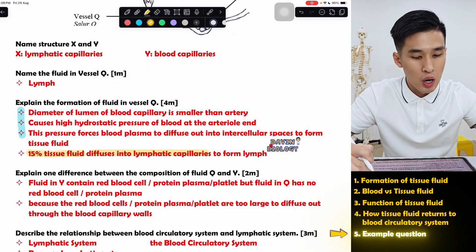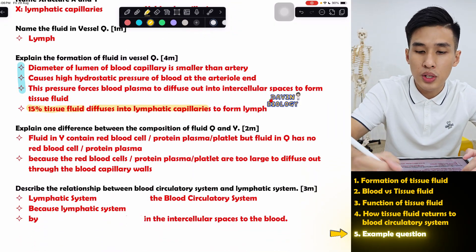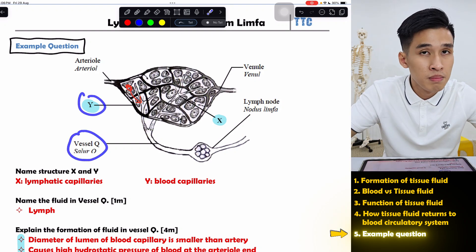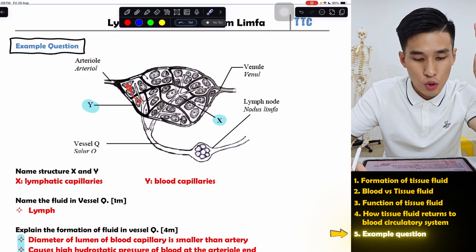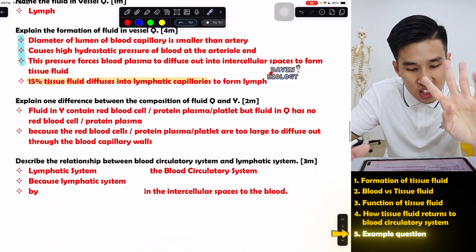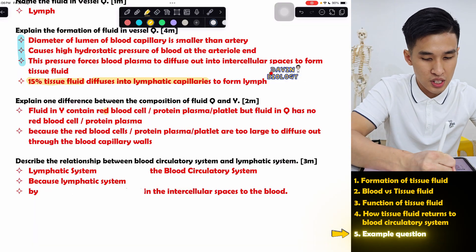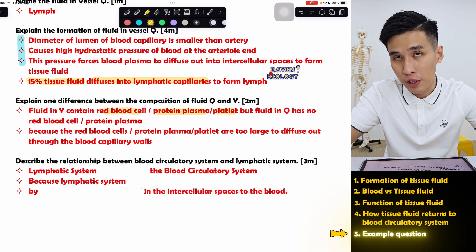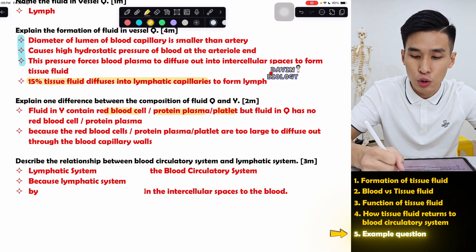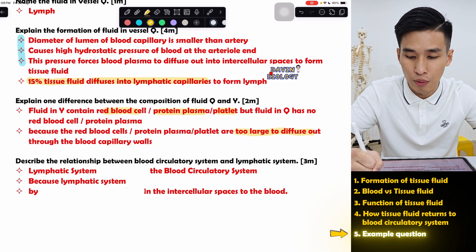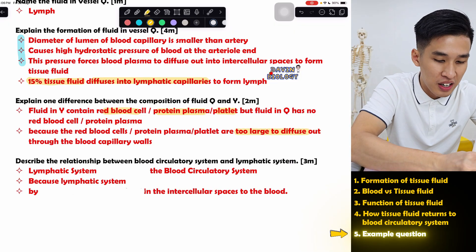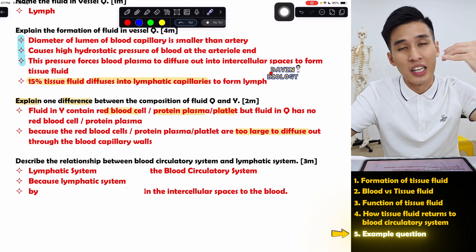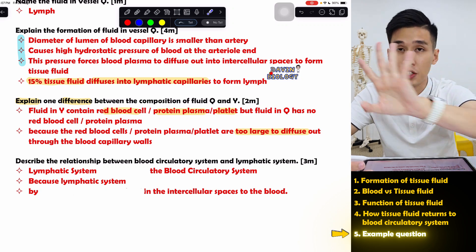One difference in composition between vessel Q (lymph) and vessel Y (blood): blood definitely contains red blood cells, plasma proteins, or platelets — choose one. The reason these are absent in lymph is because they are too large to diffuse out of the blood capillaries. State the difference and explain why: because they cannot come out, your lymph and tissue fluid won't have these three things.